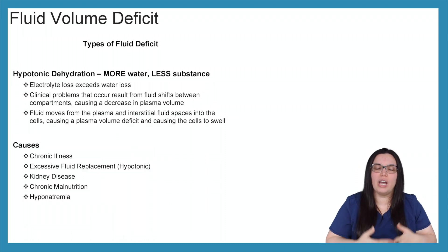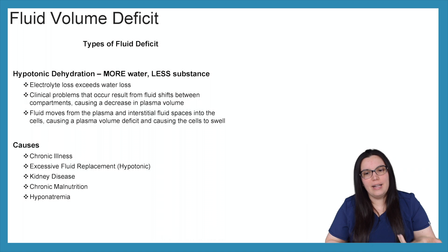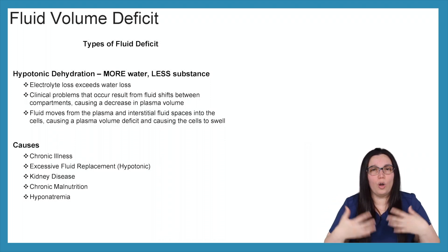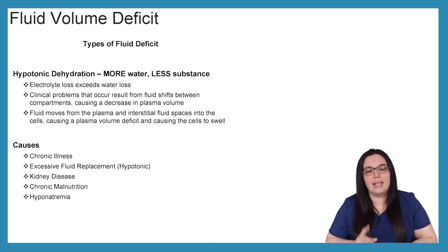And lastly, we have hypotonic dehydration, meaning that we have more water and less substance. So the electrolyte loss exceeds that water loss. So clinical problems that can occur as a result of these fluid shifts between compartments cause a decrease in plasma volume. Fluid moves from the plasma and interstitial spaces into our cells causing plasma volumes to decrease and the cells to swell and potentially burst from all of that fluid volume moving into our cells. So causes can be chronic illness, you can have excessive fluid replacement with hypotonic solutions, kidney disease, chronic malnutrition or patients that just won't eat, as well as hyponatremia.